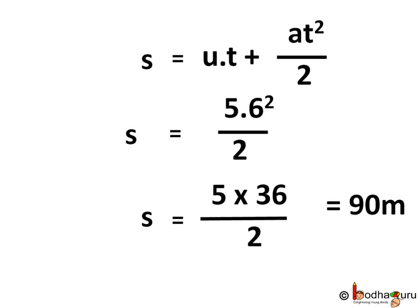If we had used the other formula s equal to ut plus half at square, u into t will be equal to 0 because the car is starting from rest. So s equal to 0 plus half at square which is half into 5 into 36 that is equal to 90 meters. Both formulae gave us the same results. Bye bye.